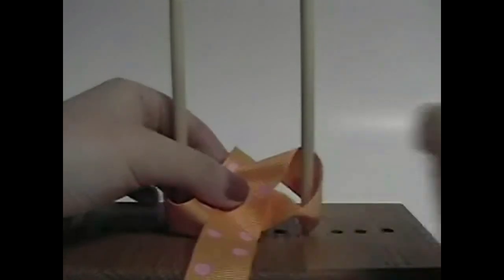So now the wrong side of the ribbon is touching the dowel and the right side is facing us. Take it around, bring it forward, and it will be the right side that's still facing us.